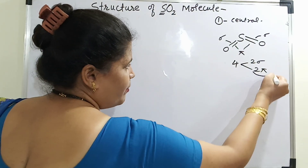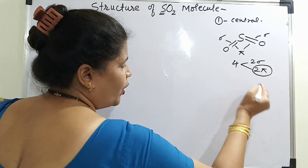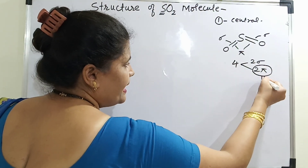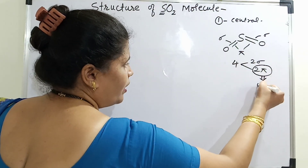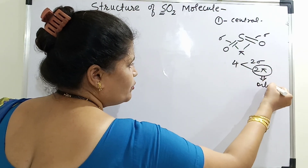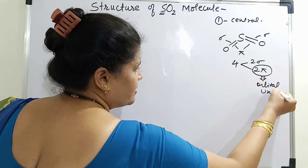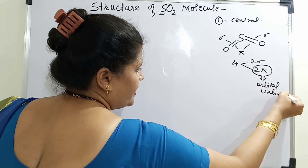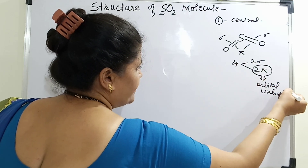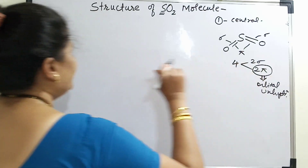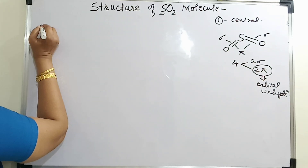Whatever the number of pi bonds are formed, those many number of orbitals I have to keep them unhybridized. So, taking into consideration this, let us start for the hybridization.